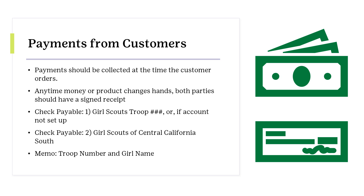Checks should only be accepted by customers the Girl Scout family knows and can connect with if there is an issue. It is recommended that no bills over $20 should be received to avoid counterfeit currency. Counterfeit currency will be the responsibility of the Girl Scout and the troop. Parents and troop leaders can use counterfeit pens to ensure the validity of the cash being collected.